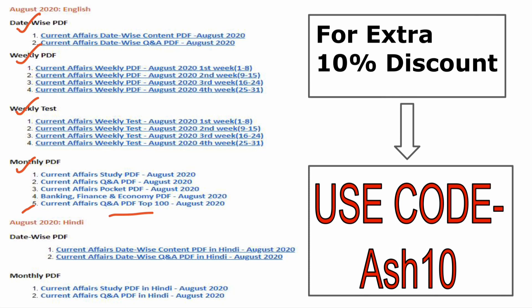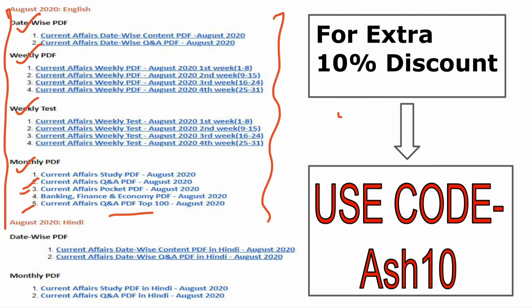In the monthly PDF section, you will get five PDFs: one is the top 100 questions of the month; second is the banking, finance and economy PDF, important for banking aspirants; third is the banking affairs pocket PDF for revision; and the fourth is the question and answer PDF. This subscription comes at a very nominal price, and with code AS10 you get an extra 10% discount. Current affairs are provided in both English and Hindi.